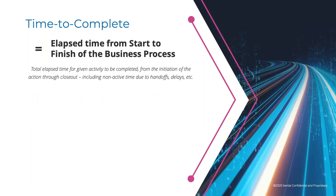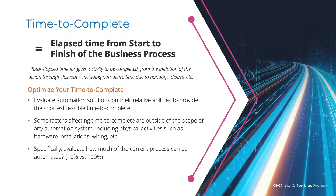The next metric is time to complete. Time to complete is focused on the total elapsed time for an activity to be completed — from the point the activity is requested to the point when it's finished — including any idle time due to handoffs, delays, approvals, or scheduling. During evaluation, teams should prioritize solutions based on their ability to offer the lowest feasible time to complete, meaning prioritizing solutions that can automate the highest percentage of tasks in the activity while also eliminating as much idle time as possible.